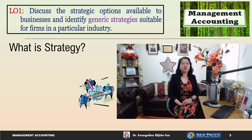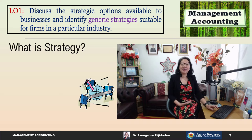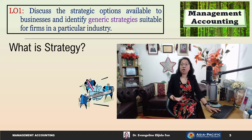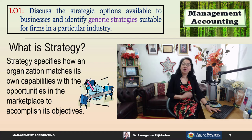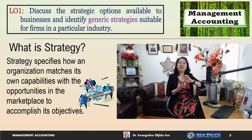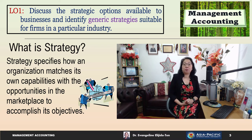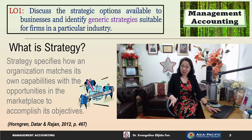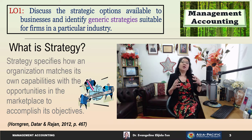In learning objective one, we will discuss the strategic options available to businesses and identify generic strategies suitable for firms in a particular industry. First, let us answer the question: what is strategy? Strategy specifies how an organization matches its own capabilities with the opportunities in the marketplace to accomplish its objectives. This definition is found in Horngren et al.